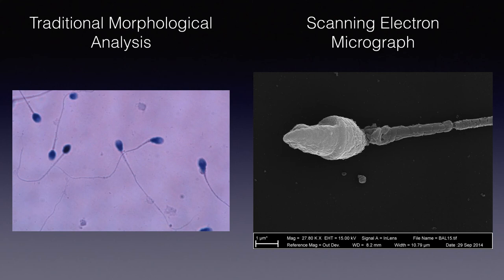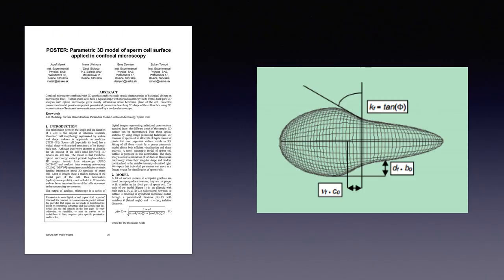While the aforementioned techniques have great potential for influencing clinical outcomes, none of them take into account the fact that spermatozoa have three-dimensional structures with pronounced asymmetry. Traditional microscopy only gives information about a single geometric plane of the cell, potentially ignoring unique facets and surfaces. To address this concern, previous researchers have created a parametric model that provides important geometrical parameters describing the 3D shape of the cell surface using 3D reconstruction of horizontal cross-sections acquired by a confocal microscope.